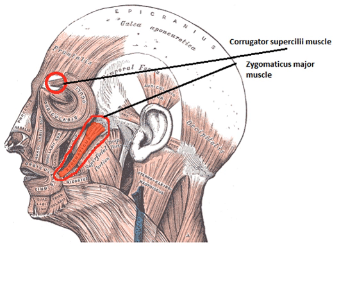A subject's blood volume pulse can be measured by a process called photoplethysmography, which produces a graph indicating blood flow through the extremities. The peaks of the waves indicate a cardiac cycle where the heart has pumped blood to the extremities. If the subject experiences fear or is startled, their heart usually beats quickly for some time, causing the amplitude of the cardiac cycle to increase. This can clearly be seen on a photoplethysmograph when the distance between the trough and the peak of the wave has decreased. As the subject calms down and the body's inner core expands, allowing more blood to flow back to the extremities, the cycle will return to normal.